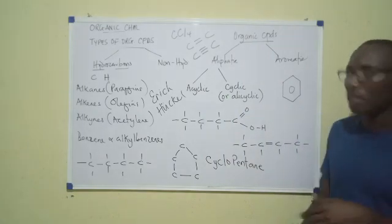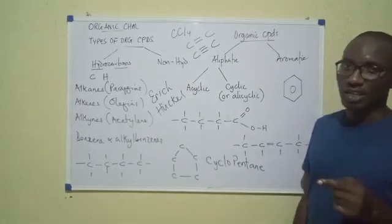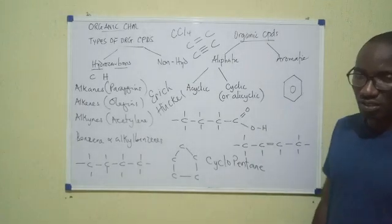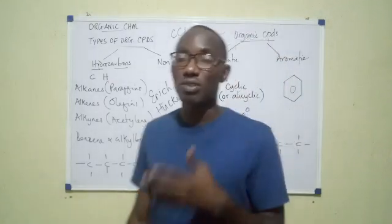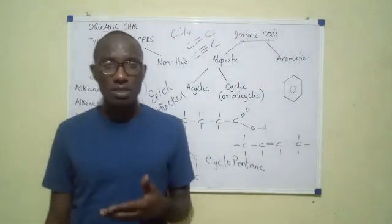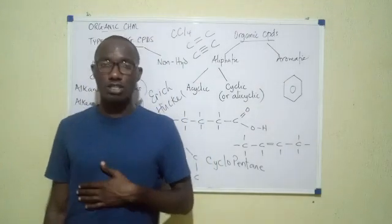So benzene, having achieved this stability, would not want to lose it so easily. And it loses the stability when it undergoes addition reactions. So put in another way, addition reactions destroy the benzene ring. But substitution reactions preserve the integrity of the ring. They keep the ring intact. So because benzene wants to preserve the integrity or wants to keep the integrity of its ring, it chooses substitution over addition.